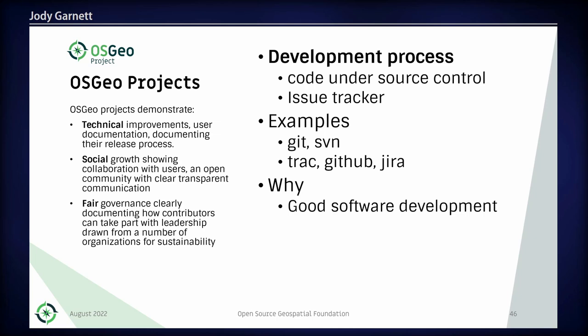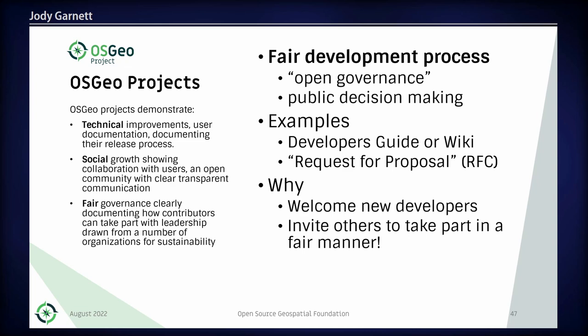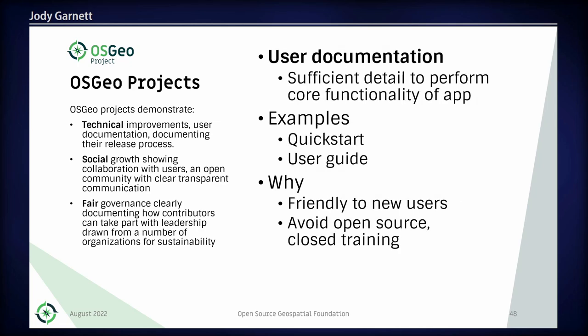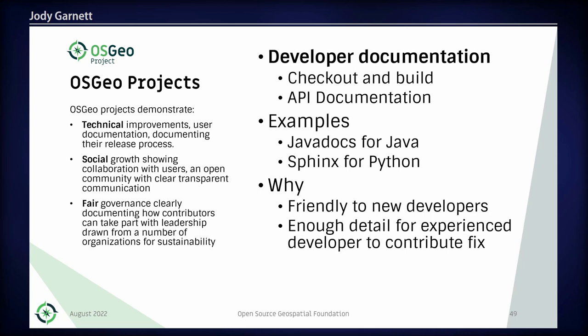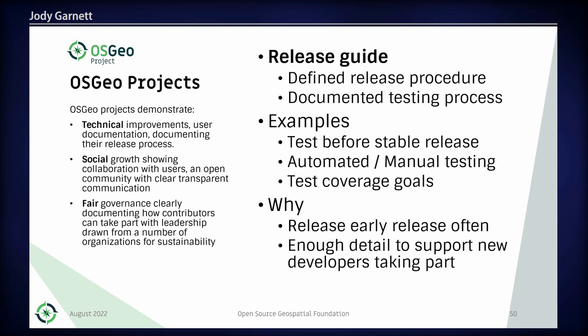For the development process, we want evidence of good software development — release schedules, tests, and quality assurance. We also want evidence of good governance: are you making decisions as a team? For openness to development, beyond documenting your project, we want it to be friendly to new developers — enough detail for an experienced developer to come in and contribute a fix, and enough process documented that a volunteer could make a new release of your software.